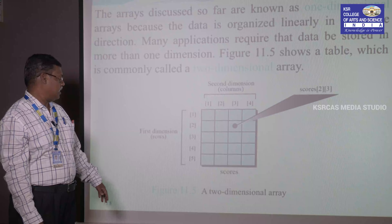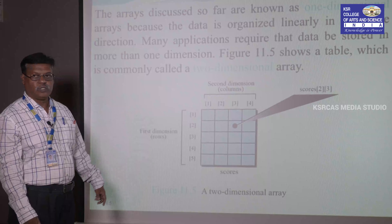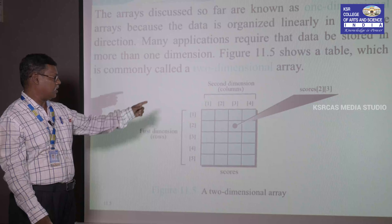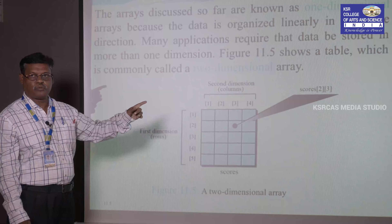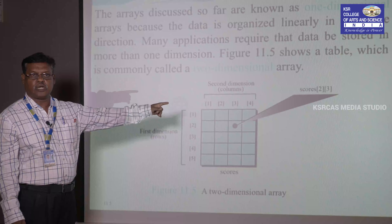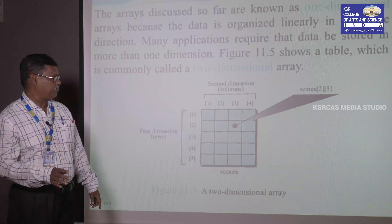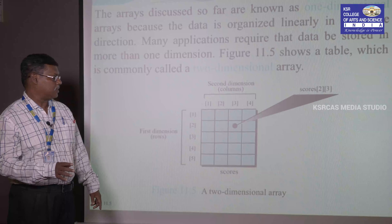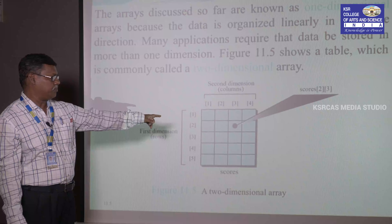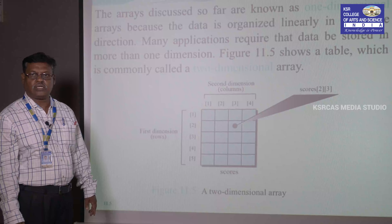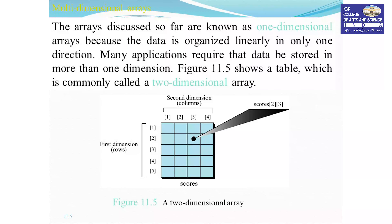In a two-dimensional Array, we represent the Array by means of two indices: one is row and another one is column. For example, score[2][3] — here, 'score' is the name of the Array, 2 represents the number of rows, and 3 represents the number of columns. We can point to the element at the second row and third column. This is an example of a two-dimensional Array.